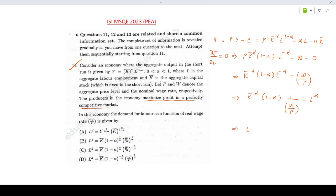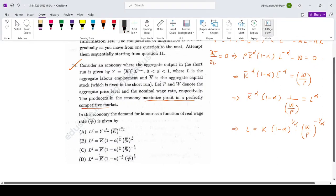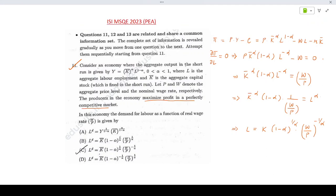So l is basically k bar, 1 minus alpha to the power 1 by alpha, into W by P to the power minus 1 upon alpha. If you look at the options, that matches with option number C. So this is your labor demand function.